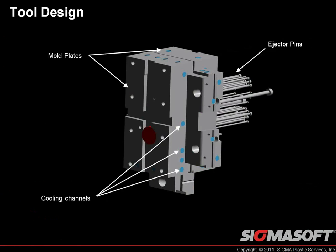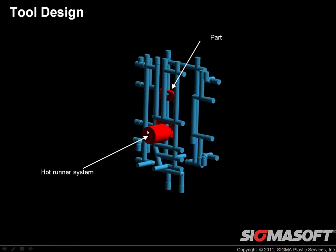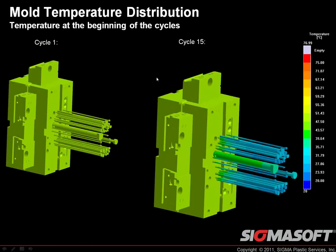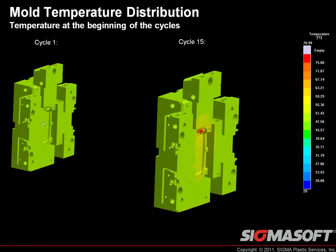Here's an example of the full tool design capabilities. We have mold plates, cooling lines in blue, ejector pins, a hot runner manifold, and the part inside. Coupling this with the multi-cycle simulation: comparing cycle one versus cycle 15, all the ejector pins go through mold plates that have cooling lines, but they're also in contact with the part and cavity when polymer flows through. After 15 cycles you can see the pins have quite a different temperature distribution, and the mold cavity is heated up considerably after 15 shots of hot polymer. Being able to capture more of this gives you better results.